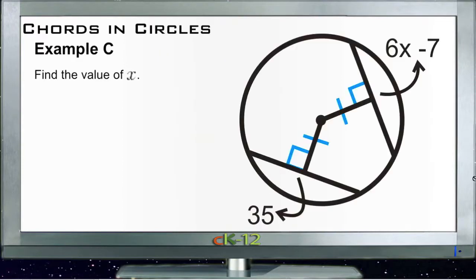And then Example C. Example C says find the value of X. Well, this one is actually a little easier than it looks because we have this information right here that tells us that this chord right here, or this, what would be a radius if it goes all the way out, this radius right here and this radius right here are cut into line segments that are congruent.